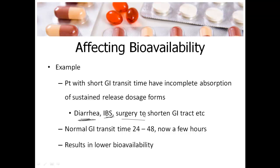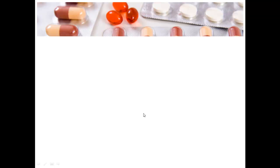For reference, the normal GI transit time is between 24 and 48 hours. In cases of short transit, it could be as brief as 4 to 8 hours, and that does result in lower bioavailability.